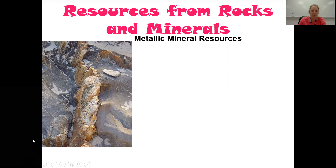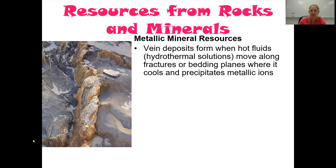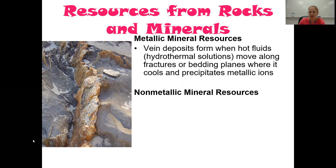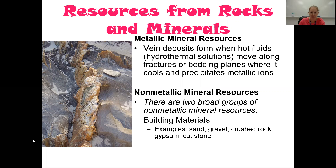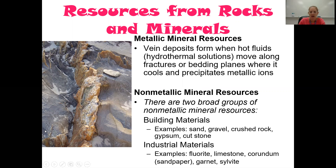The last part is a reminder that these rocks are made of minerals and therefore have uses. We find them in vein deposits, where hot hydrothermal fluid dissolves minerals that get into fractures or bedding planes, and when it cools, metallic ions are left behind as a vein deposit. For non-metallic minerals, we can use them as building or industrial materials — for example, corundum has a high hardness, so it's used on sandpaper. Thanks for watching.